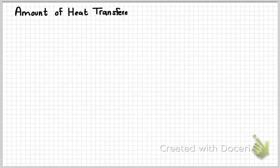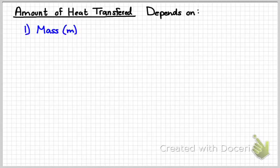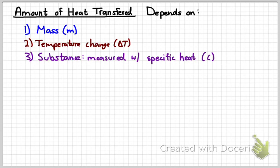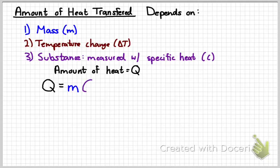To figure out the amount of heat transferred, we use the equation that we learned that relates these three things. First is the mass. The second is the temperature change, or delta T. And then the third is what the object is made out of. We measure that with the term specific heat. Remember that has the symbol capital C. And so the amount of heat transfer, we give the symbol Q, and we get the equation Q equals MC delta T.